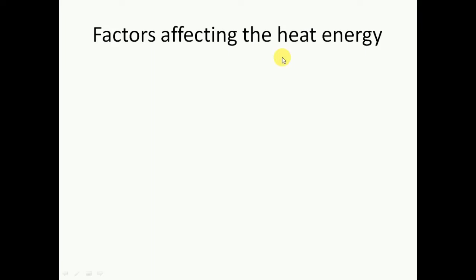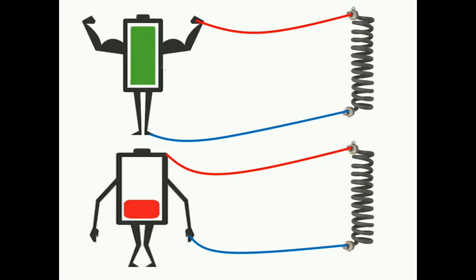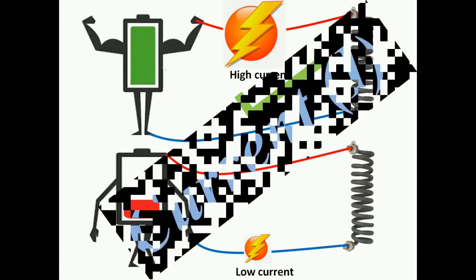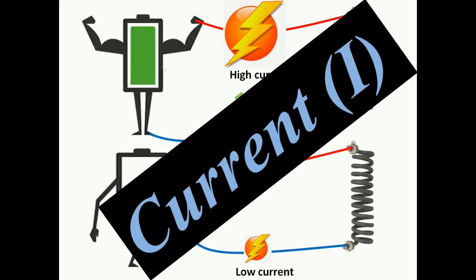To understand the factors, we'll take some examples. In this first example, you can see I have two similar heater coils. I'm giving high current to one coil and low current to the other. The coil with higher current will get more electrical energy and convert it into more heat energy. So the upper one will produce more heat energy. This gives us the first factor: current is a factor affecting the heat produced by a conductor.